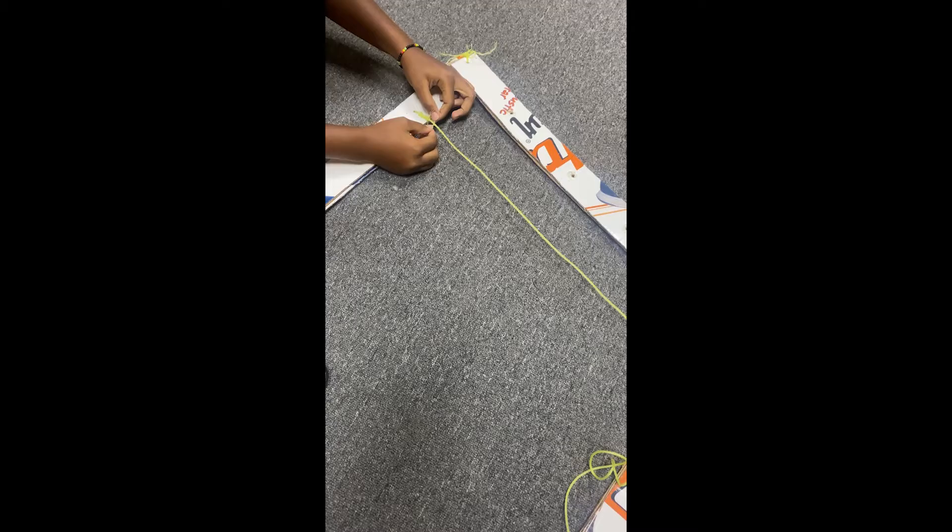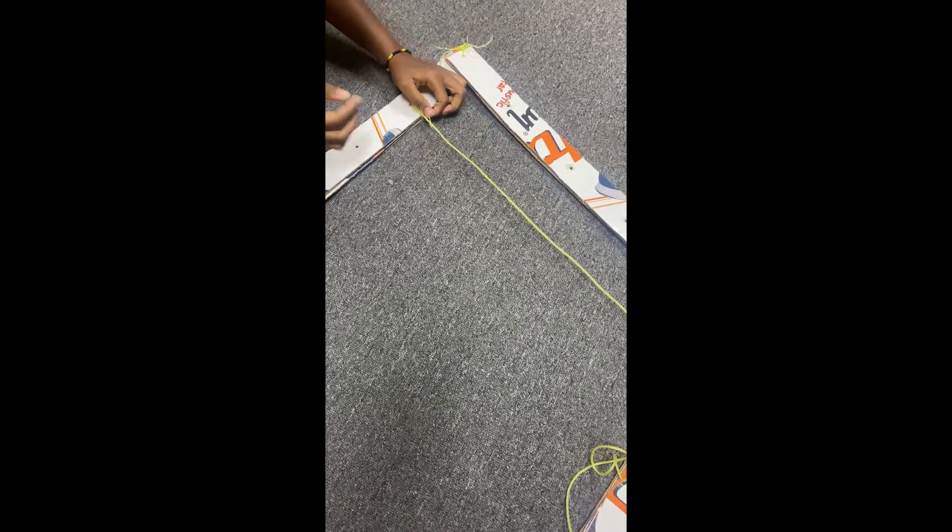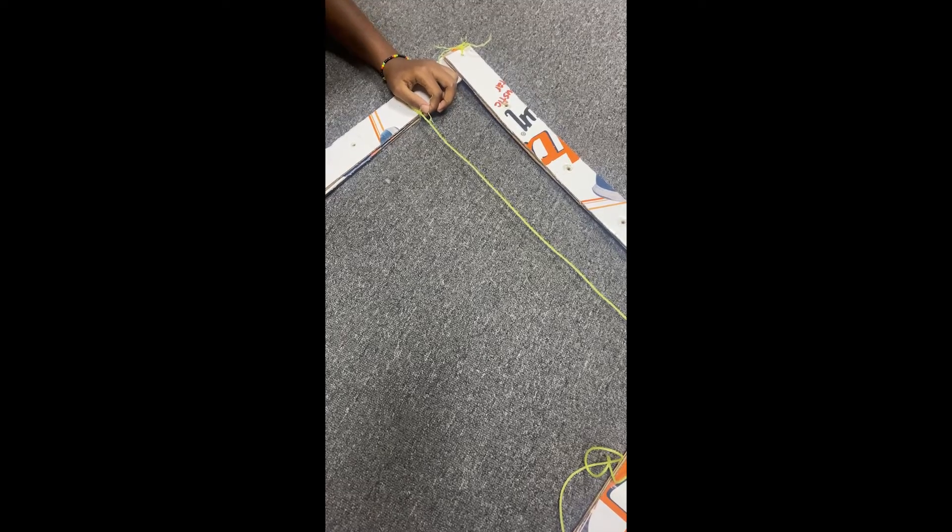Using the ropes, tie the ends of the cardboard to form a square shape. Then tie the rope vertically and horizontally across the square to form a grid.